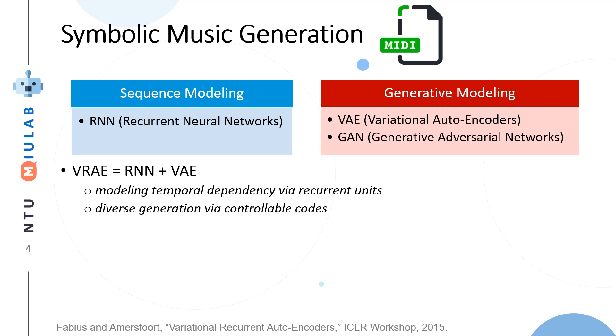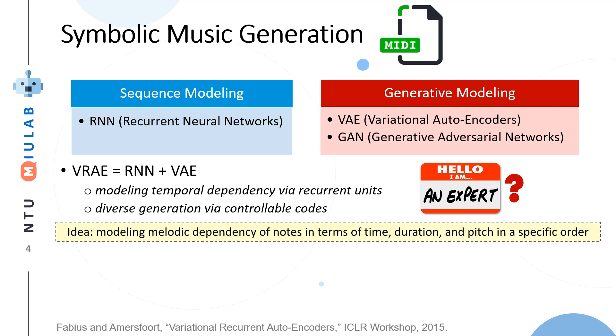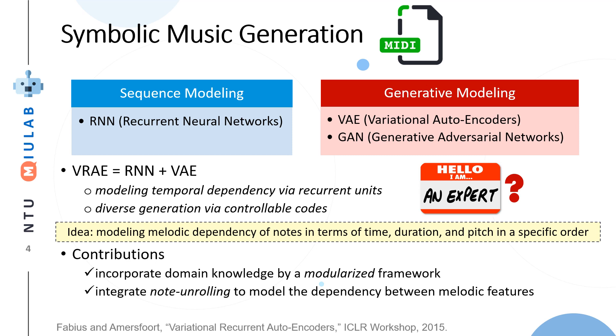However, in previous work, they do not consider any expert information in their model. They directly allow the model to learn this dependency. If we can inject some expert information, probably we can model the music better. Our idea is to model the melodic dependency of note attributes, including time, duration, and pitch in a specific order. Our contributions include incorporating domain knowledge by a modularized framework and incorporating note unrolling technique to model dependency between melodic features. We achieve better results than other generative models because we inject the domain knowledge.